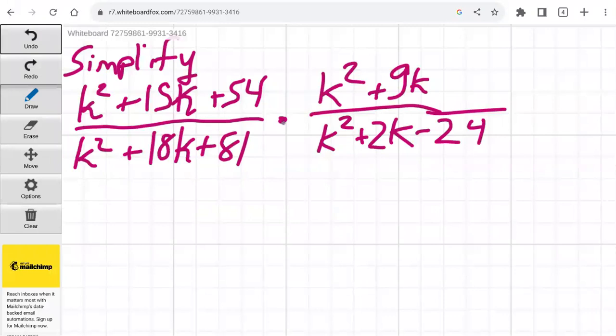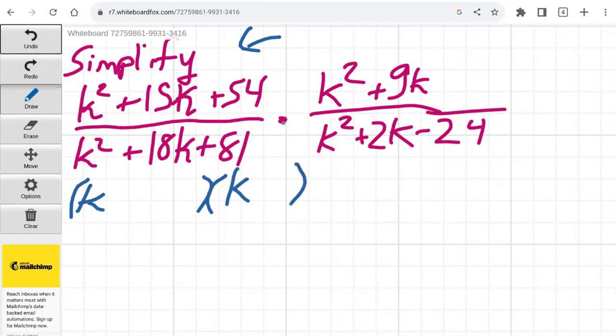Let's first start with the term on the left side. To factor the expression in the numerator, we're going to set up our parentheses with k as the first term. Now we need to think of two factors of 54 that, when added together, equals positive 15. So 9 times 6 is 54, and 9 plus 6 is 15. So those factors look like they're going to work out. Write a plus 9 here, and then a plus 6 here.